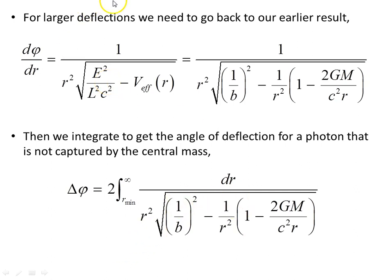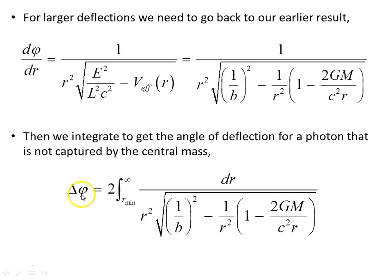For larger deflections, the small-angle approximation breaks down. Going back to the earlier result for dφ/dR, for a photon that is not captured by the central mass but undergoes a major deflection, the total deflection angle is Δφ = 2 times the integral from r_min to infinity of this expression. This must be numerically integrated for known values of b to determine the angle of deflection in that case.